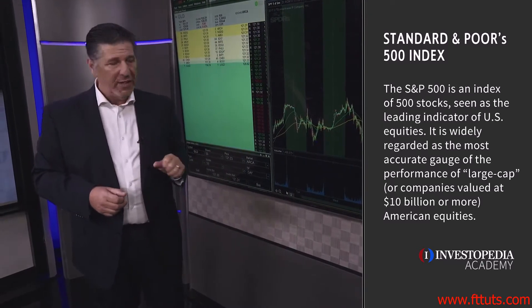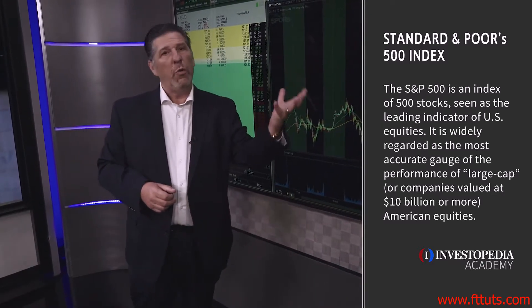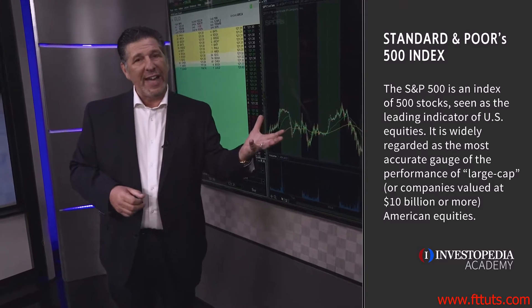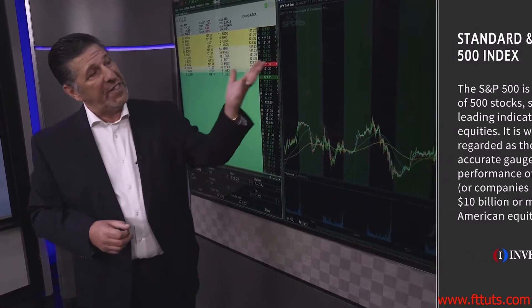Generally speaking, when the Standard & Poor's 500 is going up, we want to be buying stocks and be long stocks. And when the Standard & Poor's 500 is going down, we want to be short stocks. Which brings me to my first extremely important lesson in day trading.